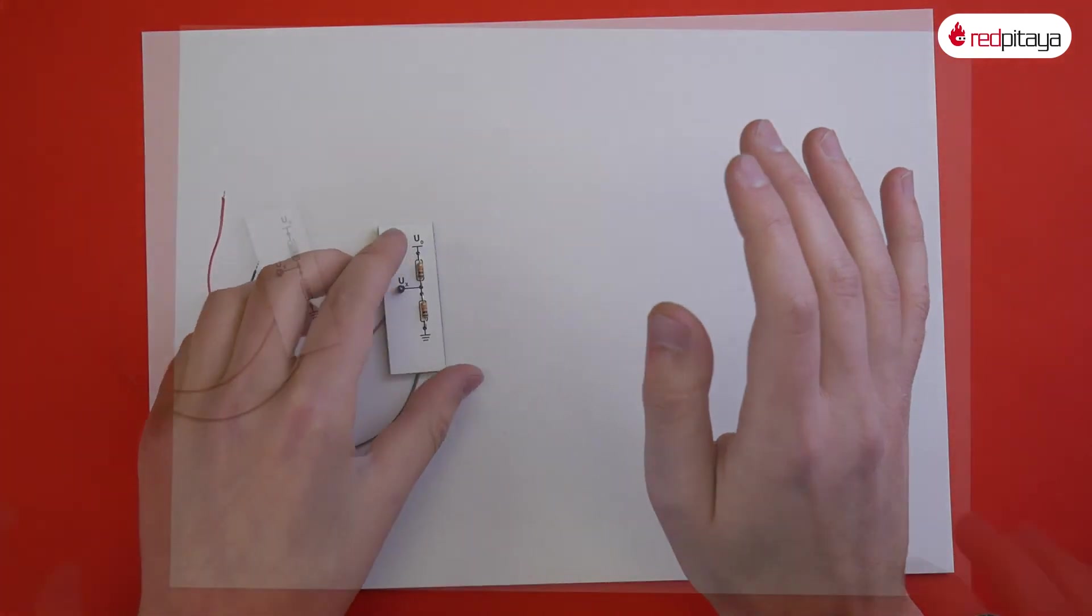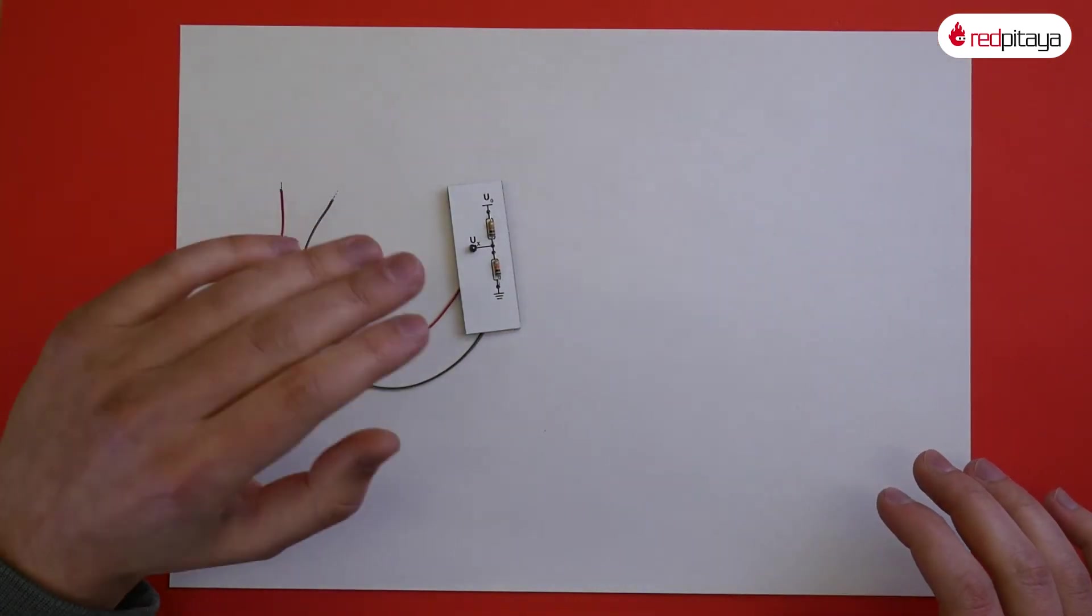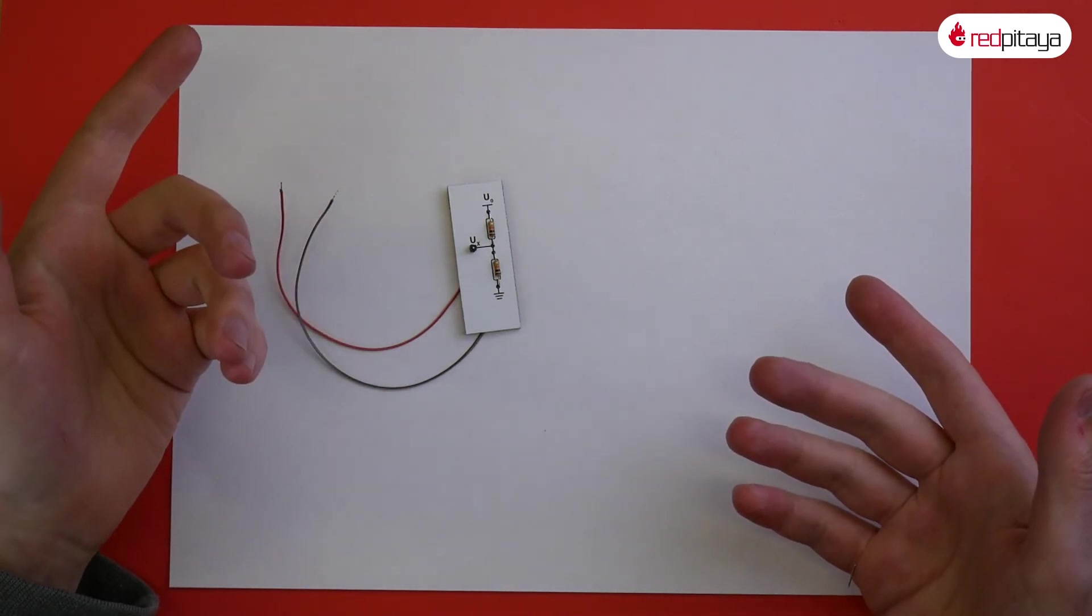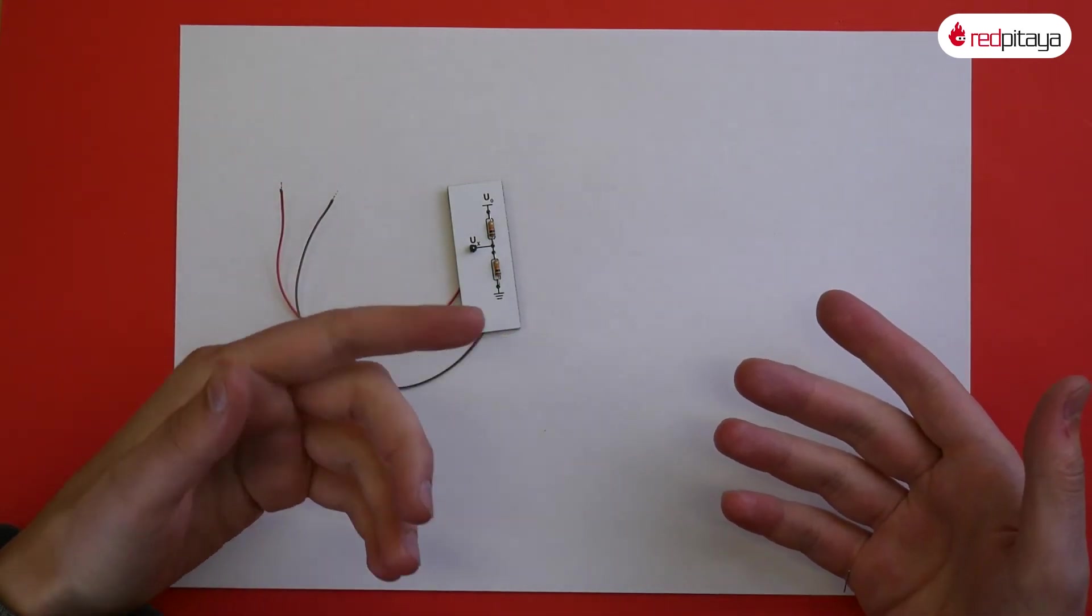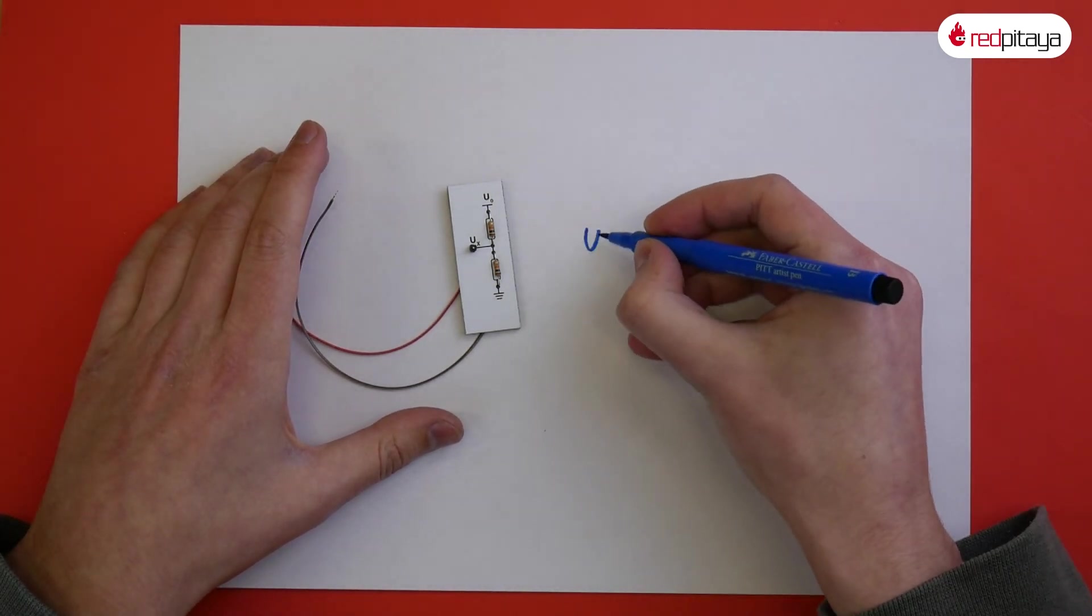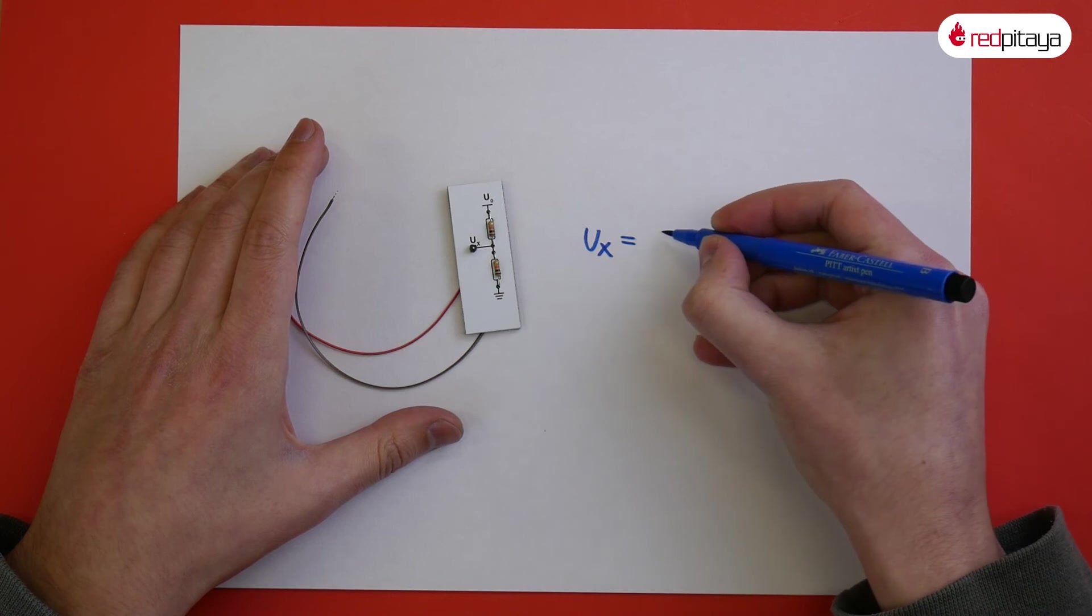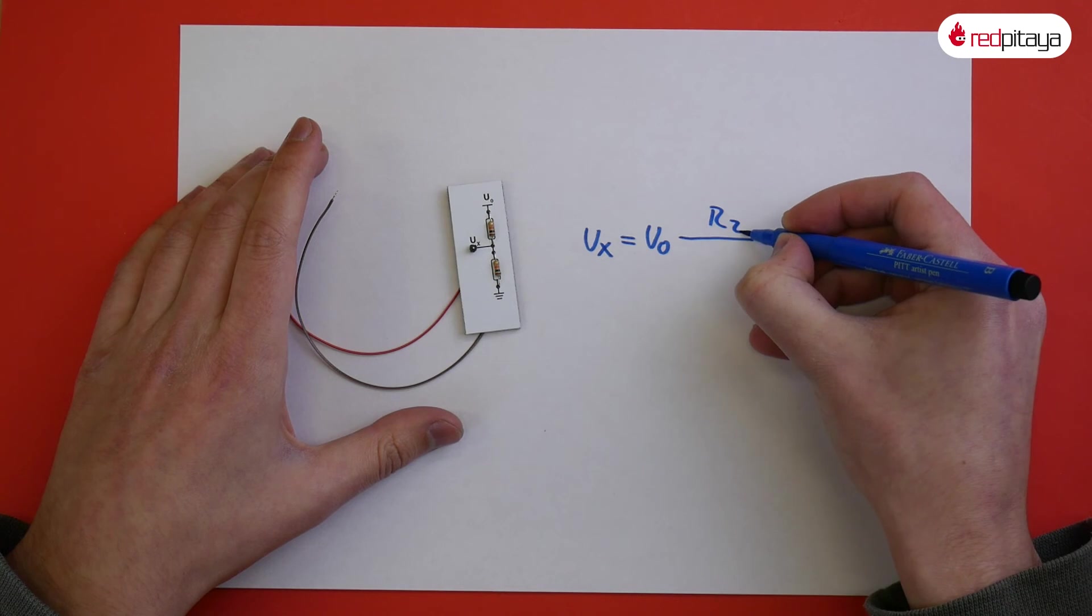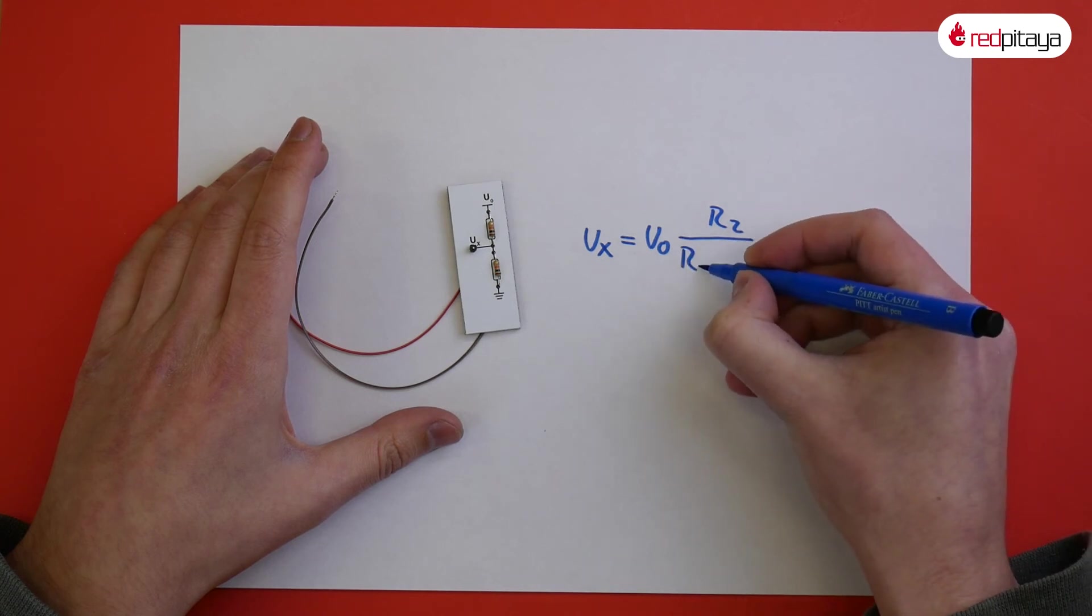Voltage divider. Voltage divider is a pair of resistors wired in a series. Usually one resistor is connected to reference voltage and the other one to the ground potential. Voltage on junction point is calculated as Ux equals U0 times second resistor over the sum of both resistors.